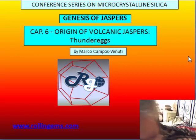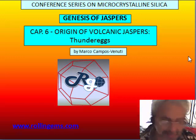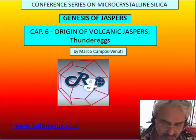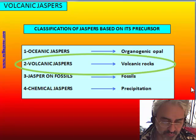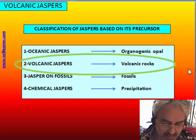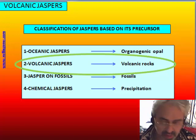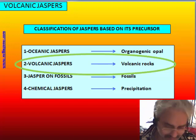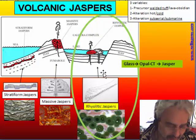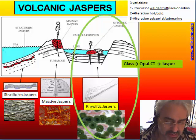In this chapter we will talk about thunder eggs, which in our classification is a special variety of rhyolitic jasper. We are in the group of volcanic jasper that are the result of alteration of volcanic rock, and especially of the glass of the volcanic rock. So this is a kind of geological sketch.